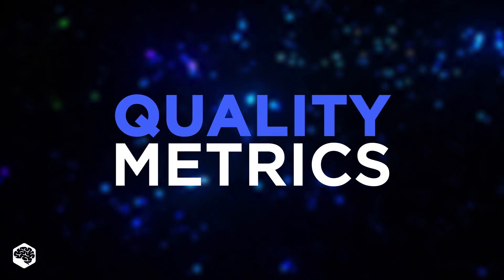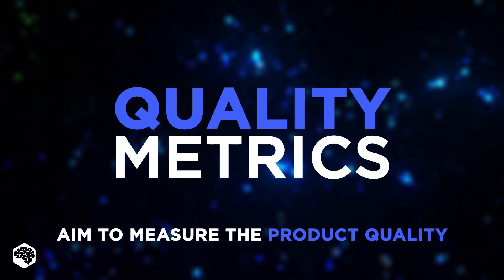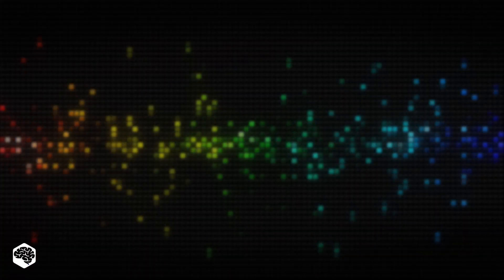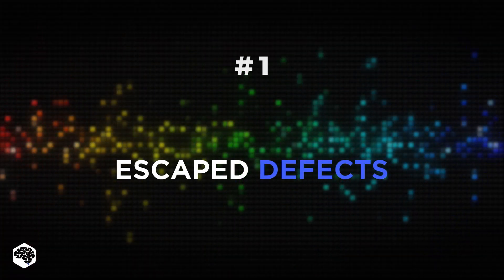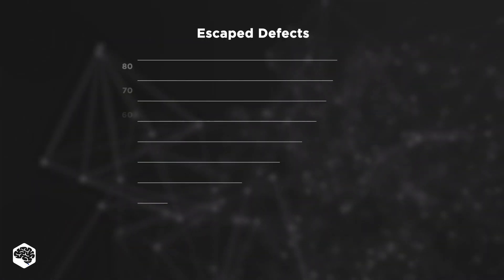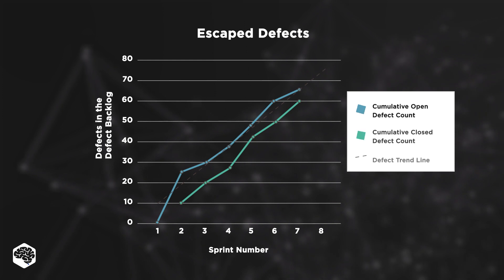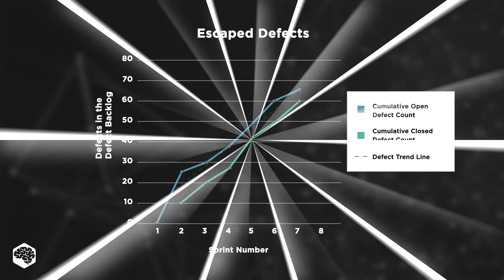Let's start with quality metrics. The priority for each software development team and manager is to measure product quality and detect negative tendencies. The first metric is escaped defects — all changes, edits, and unfixed bugs that developers could have fixed but didn't. Record their precise number and nature to know which mistakes usually escape developers' eyes.